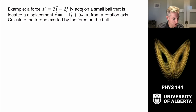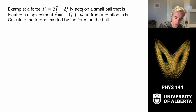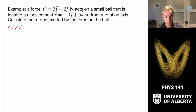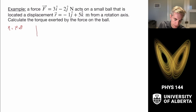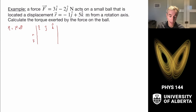We can calculate a cross-product-based torque directly. Given a moment arm r = −1ĵ + 5k̂ (i-component 0, j-component −1, k-component 5) and force F = 3î − 2ĵ + 0k̂, we want to calculate τ = r × F using the method of expanding the determinant.